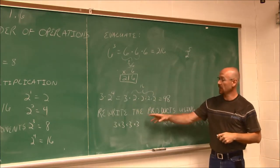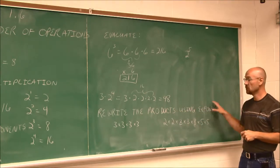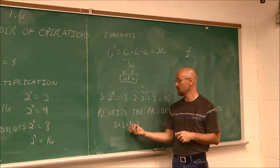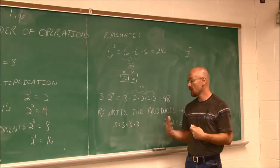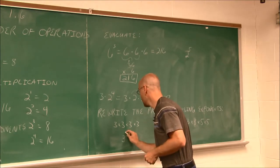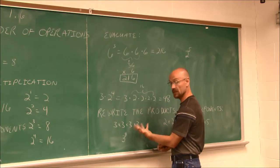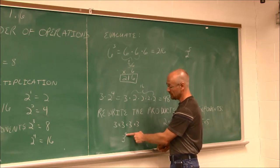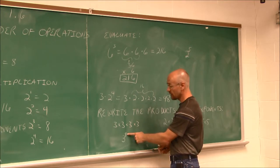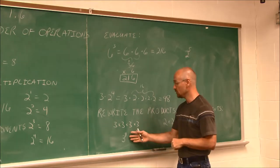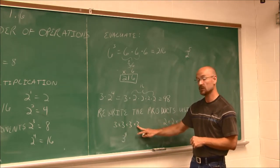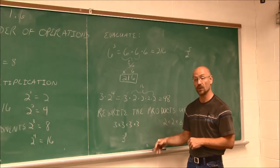The next thing we're going to look at is rewriting products using exponents. Here we have repeated multiplication: 3 times 3 times 3 times 3. Using exponent notation, the base is 3 and the power is 4, since we have four factors of 3. So that's 3 to the fourth. If you evaluate it: 3 times 3 is 9, times 3 is 27, times 3 is 81. So 3 to the fourth equals 81.